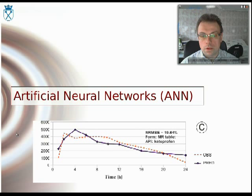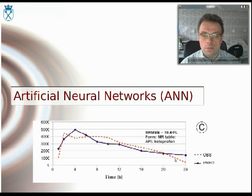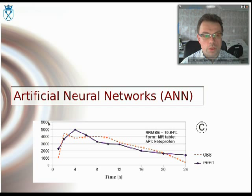This is an example of the prediction of our system — an average prediction — where you can see it is not perfectly precise. Yet, it is still able to mimic the general course of the pharmacokinetic profile, and it is also able to predict the range of concentrations, which is a very important feature of this model.